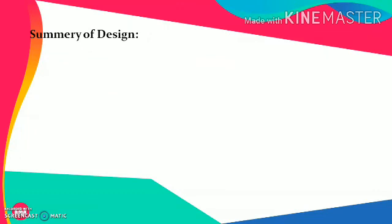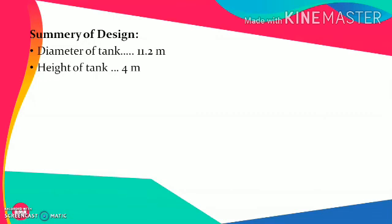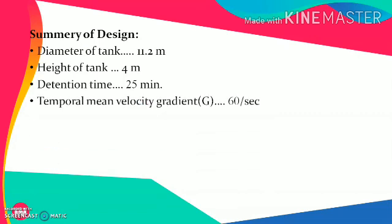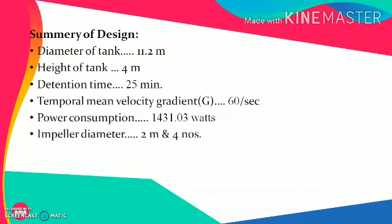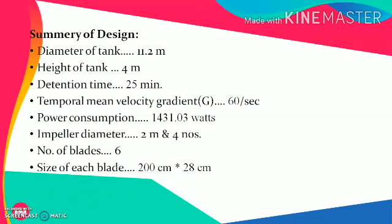Summary of design: diameter of tank = 11.2 m, depth of tank = 4 m, detention time = 25 minutes, temporal mean velocity gradient G = 60/s, power consumption = 1431.03 W. There will be four impellers, each with a diameter of 2 m, six blades mounted on each impeller, each blade sized 200 cm × 28 cm, and the speed of rotation is 5 rpm.